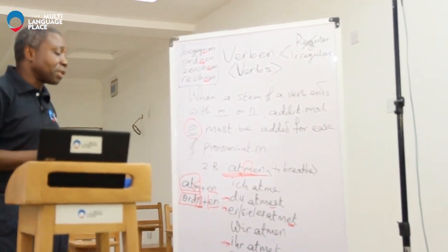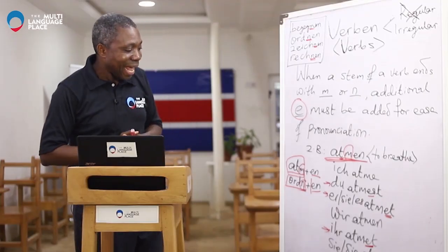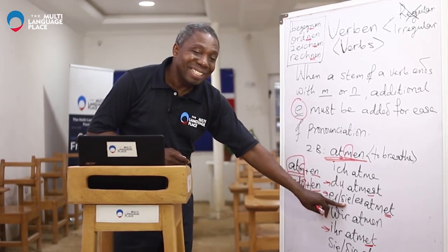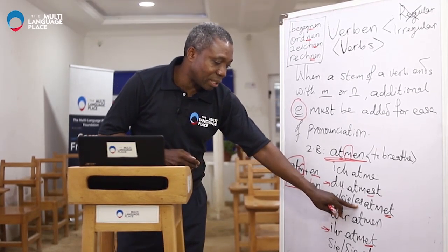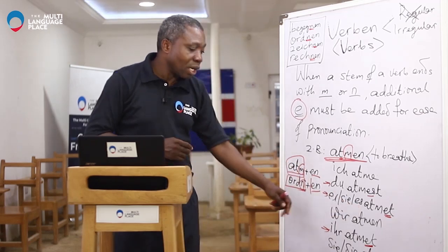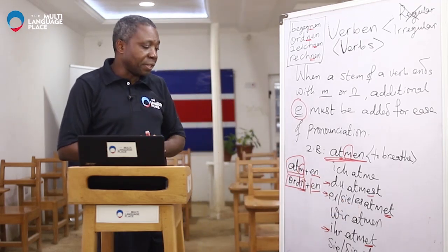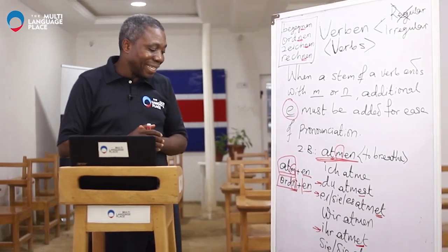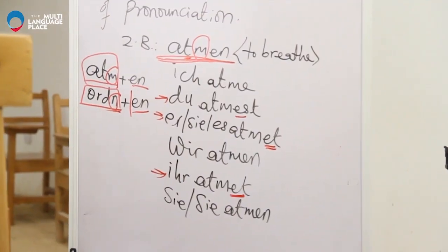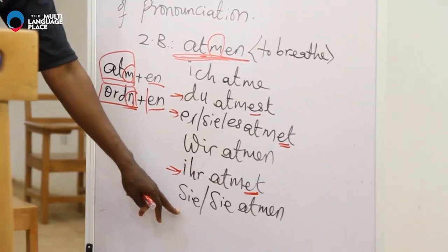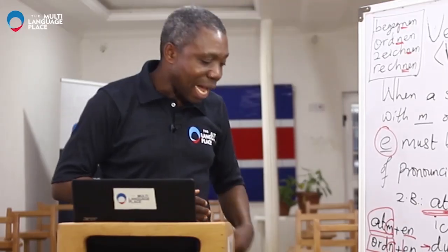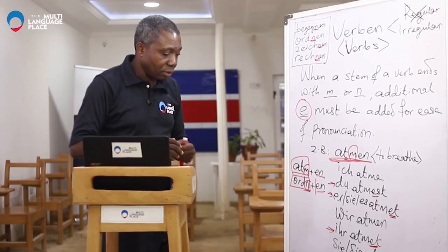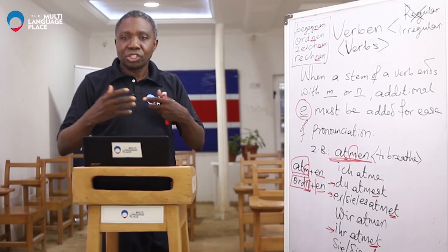Ich atme — I breathe; du atmest — you breathe; er atmet — he is breathing; sie atmet — she is breathing; es atmet — it is breathing; wir atmen — we are breathing; ihr atmet — you plural, you are breathing; and then sie atmen — they are breathing or they breathe. The second 'Sie atmen' is the formal, respect form — you are breathing.